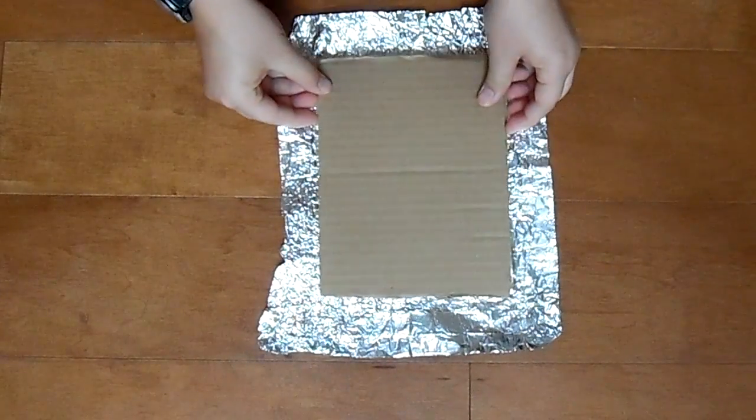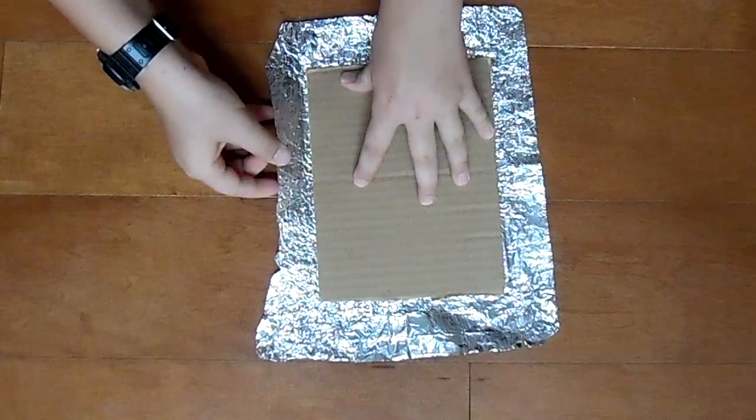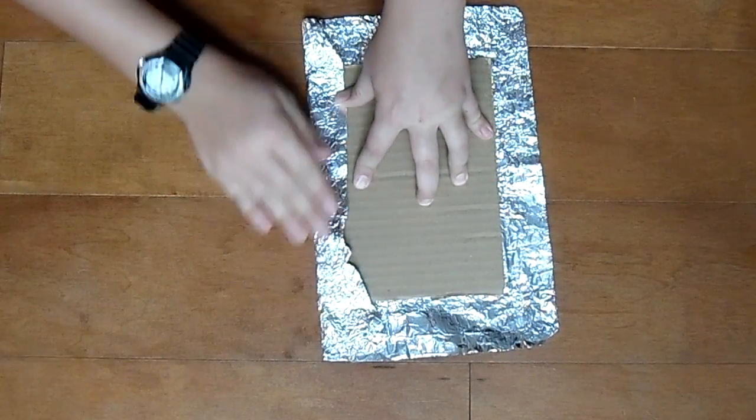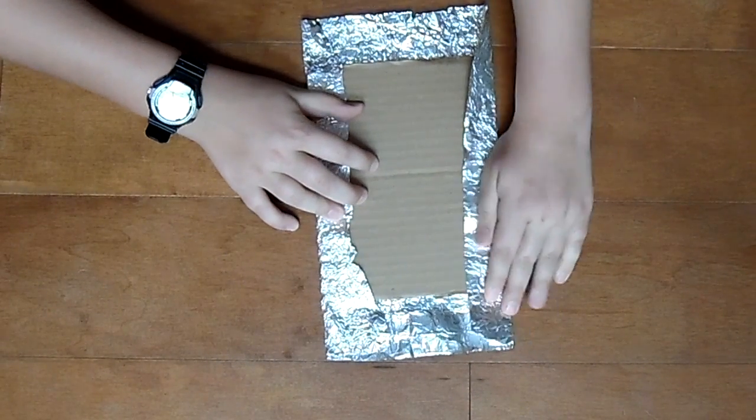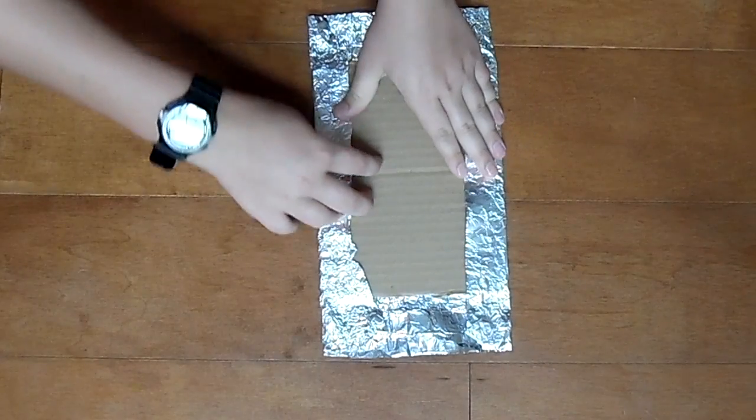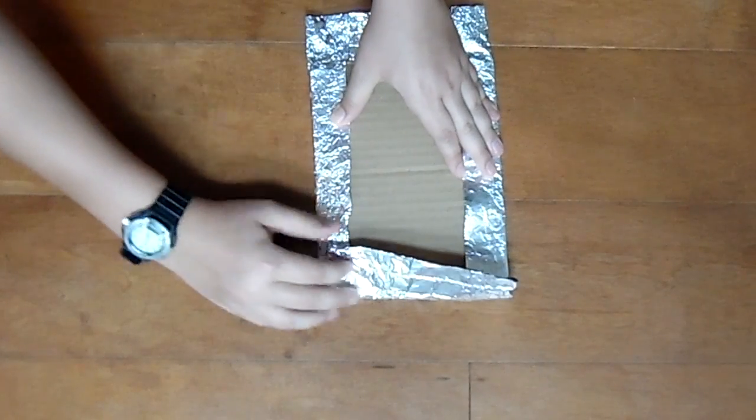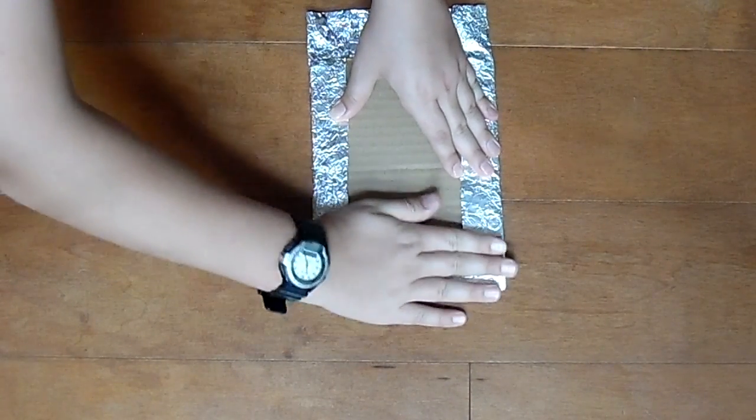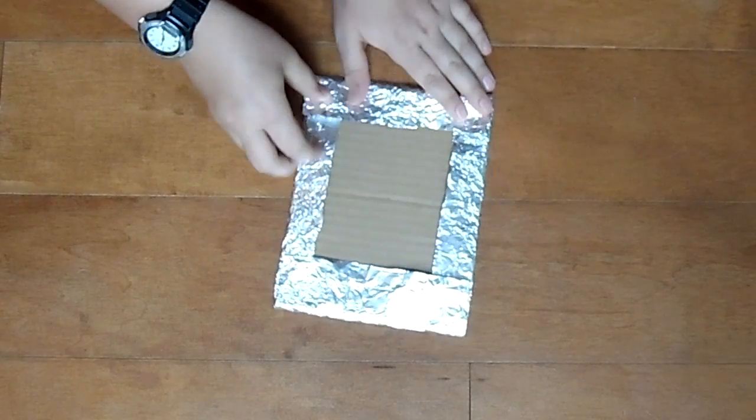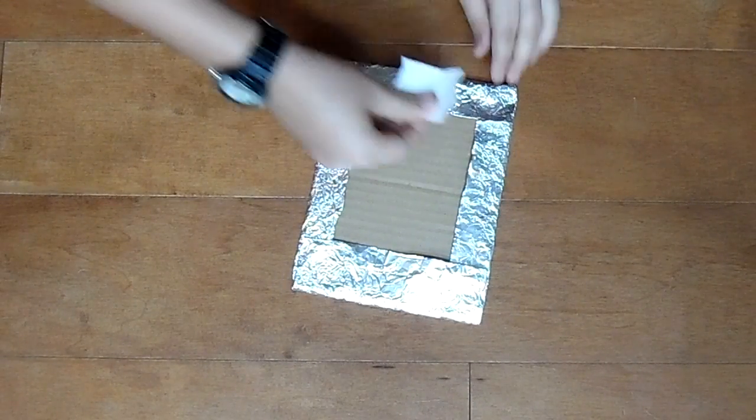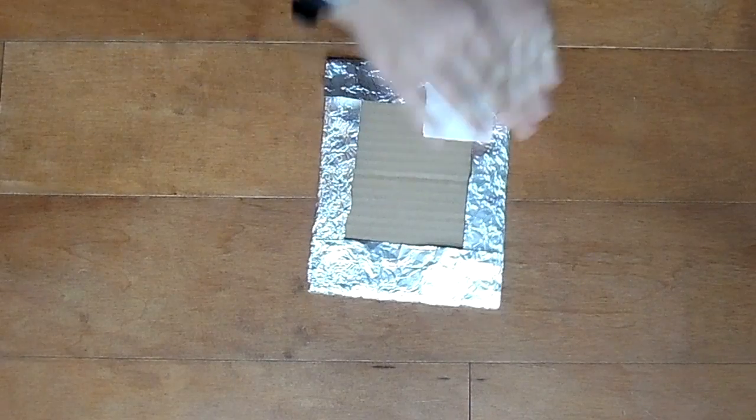First, lay the piece of cardboard on the aluminum foil. Then, fold the edges of the foil over. Fold the other edges of the foil over as well. Tape the edges of the aluminum foil down against the cardboard. When done, it should look like this.